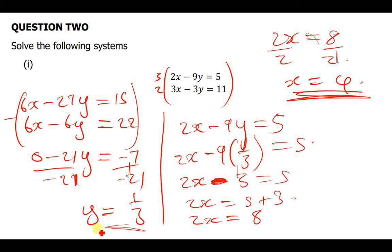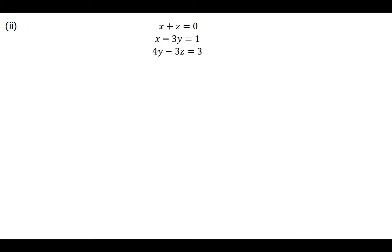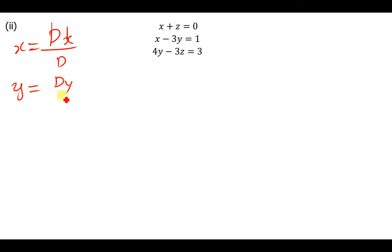Elimination has proved that our Cramer's rule answer was correct. Let's quickly move on to the next question, which is a 3 by 3 matrix. To find x you say dx over d, to find y you say dy over d, and to find z you say dz over d.